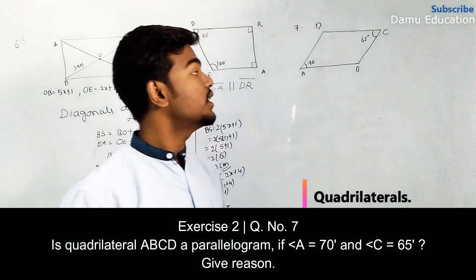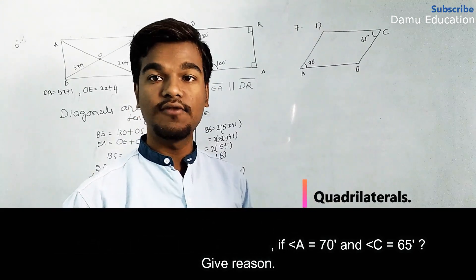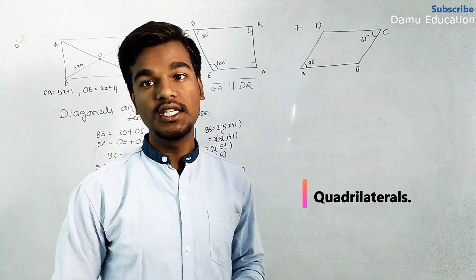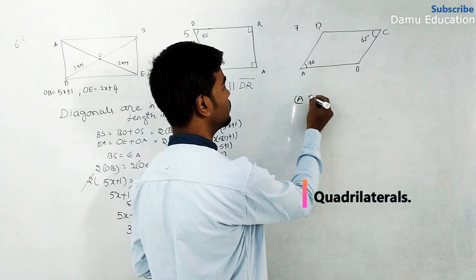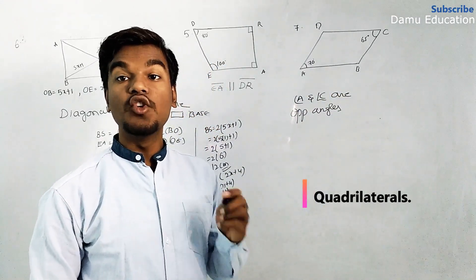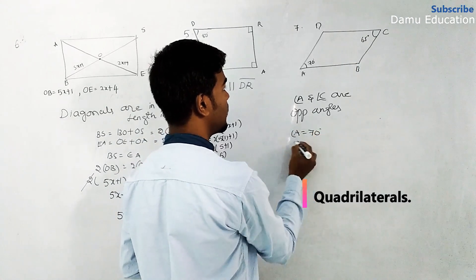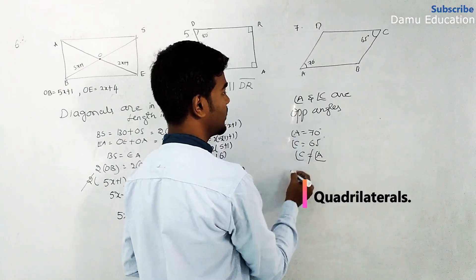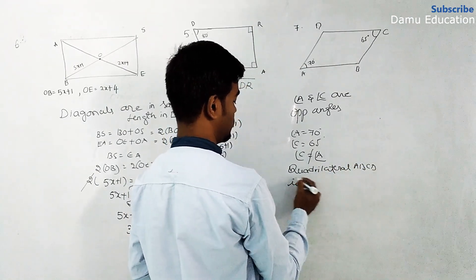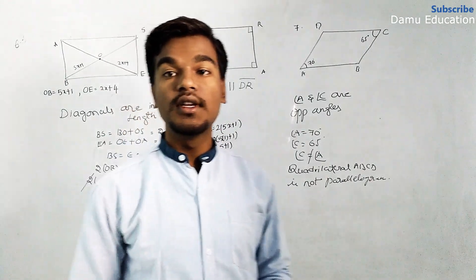For the seventh question: given quadrilateral ABCD, angle A = 70° and angle C = 65°. In a parallelogram, opposite angles must be equal and adjacent angles must sum to 180°. Here angle A and angle C are opposite angles, but 70° ≠ 65°, so quadrilateral ABCD is not a parallelogram.